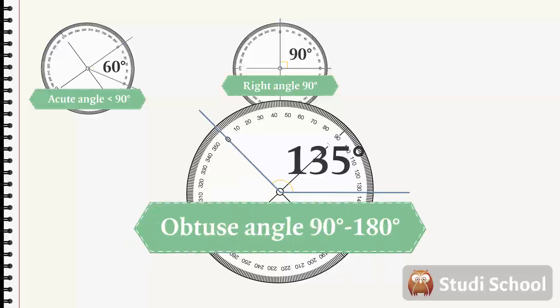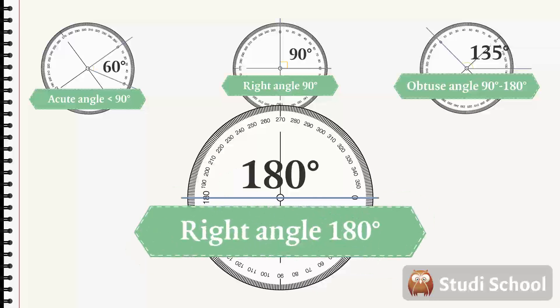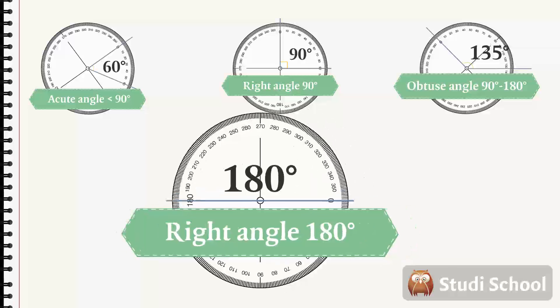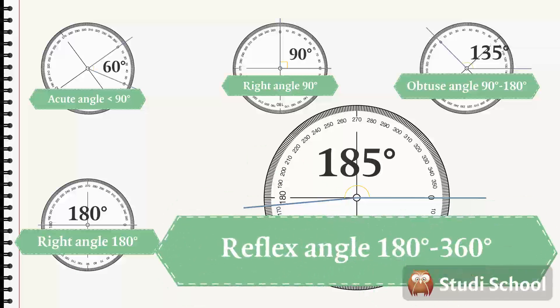This is an obtuse angle. All angles which are greater than 90 degrees and less than 180 degrees are obtuse. Now, the angle is completely straight. You can't even tell it's an angle anymore. One side points in the opposite direction from the other. This angle is exactly 180 degrees. If we make the angle even blunter, it becomes a reflex angle. You won't come across reflex angles as often as the other kinds.